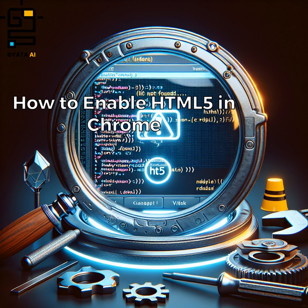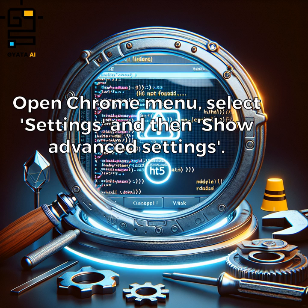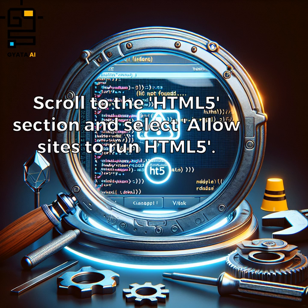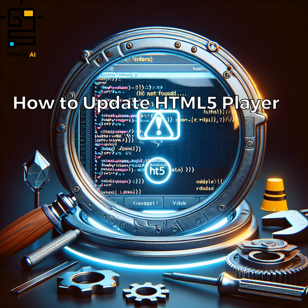How to enable HTML5 in Chrome: Open the Chrome Menu, select Settings, and then Show Advanced Settings. Under the Privacy section, click on Content Settings. Scroll to the HTML5 section and select Allow Sites to Run HTML5.